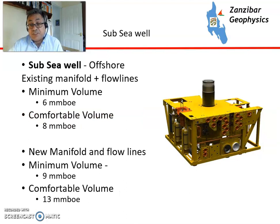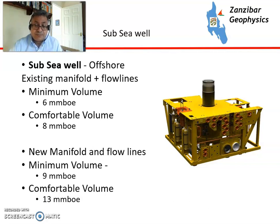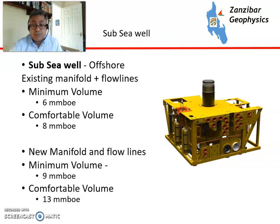Subsea wells have opened up significant portions of deepwater, for example. You've got a manifold and flow lines that you'll plug in. For an existing well, you'd want about 6 million barrels of oil equivalent to justify it, but for a comfortable volume you'd want more like 8. With a new manifold and new flow lines, you go to 9 and 13 million barrels of oil equivalent. Again, it depends to some extent on drilling depth and fluid types, but these are rough ballpark figures to enable you to see if something is likely to work.